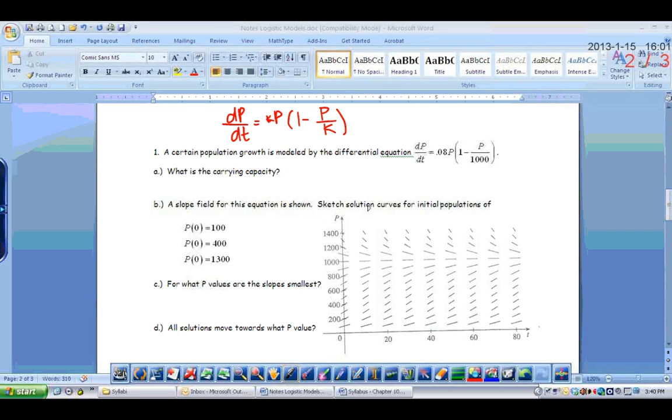If we look at number one, it says a certain population growth is modeled by the differential equation dp/dt equals 0.08p times 1 minus p over 1000. The first thing we want to do is identify what the carrying capacity is. As long as what's in parentheses is 1 minus p over some number, then that number is your carrying capacity. So in this case, the carrying capacity is 1000. And that's all you have to be able to pick out of that formula.